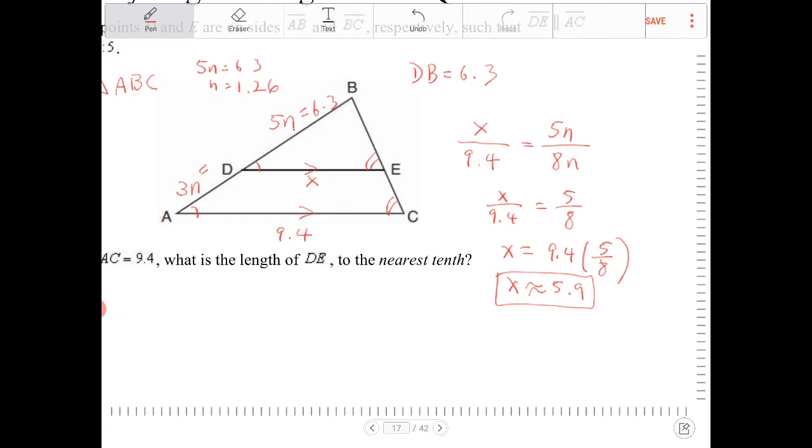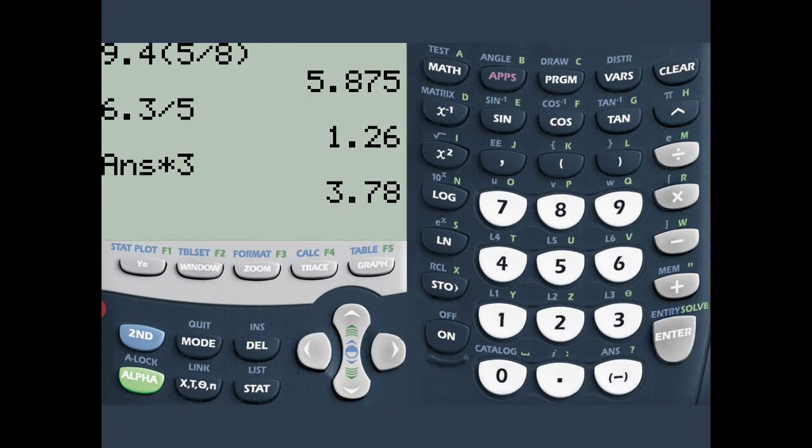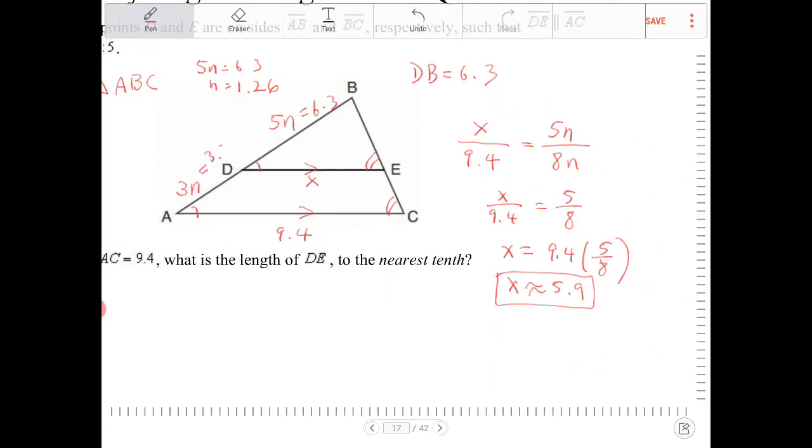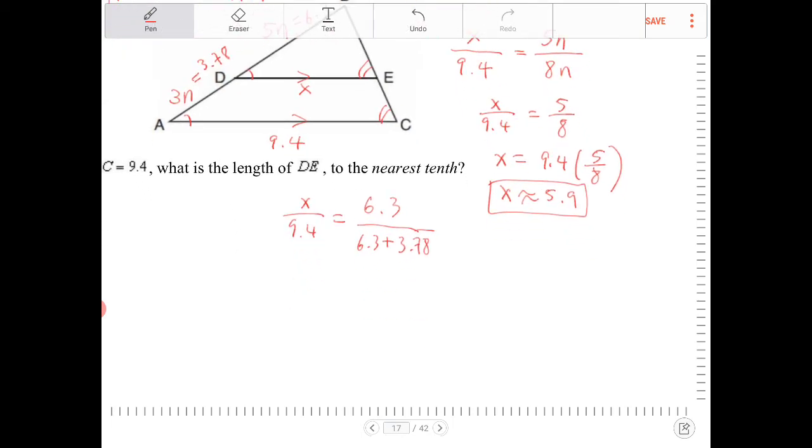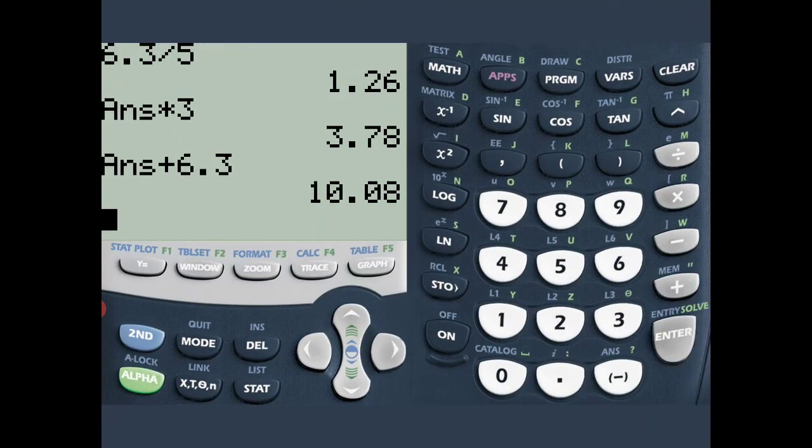And I'm going to multiply 1.26 by 3. And in order for me to accomplish this, I'm going to say X over 9.4 again. It will equal to 6.3 over 6.3 plus 3.78. And I guarantee you we're going to end up in the same place. 6.3 over 6.3 plus 3.78. What is that? Plus 6.3, that is 10.08.